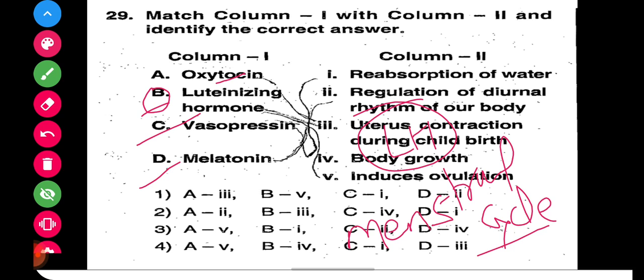B matches with the fifth option, and since B's fifth is available in only one option, we don't need to verify the rest. Oxytocin matches with third — it helps during parturition and uterine contraction. Vasopressin is the secondary name for ADH, so it is responsible for reabsorption of water. Melatonin regulates the diurnal rhythm of our body. The right answer is option A.